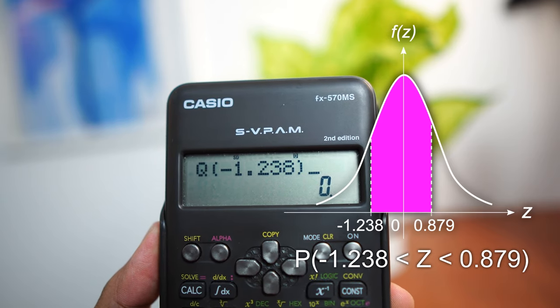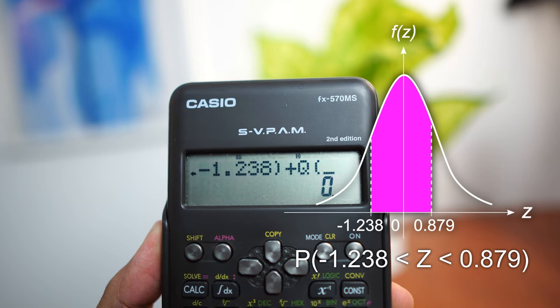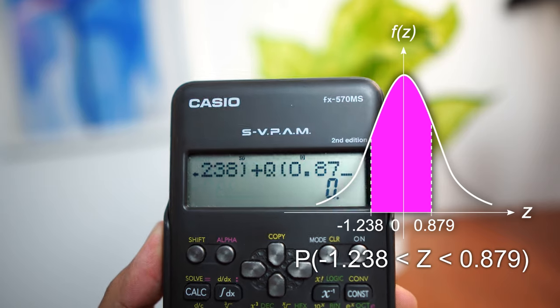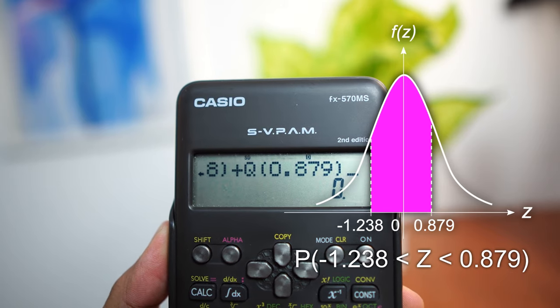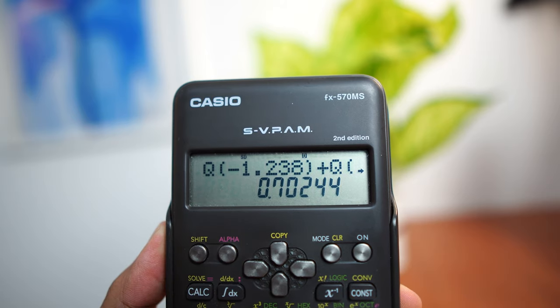key in the first Z-score, negative 1.238. Close bracket. And we add the positive side of the graph. That is 0.879. And you will see that we get the exact same value, 0.70244.